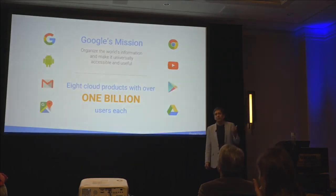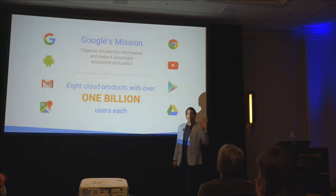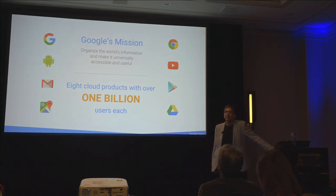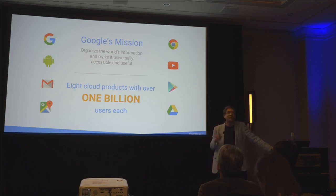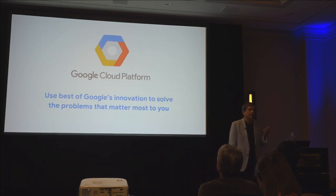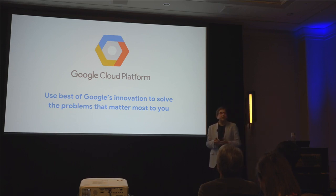I'll tell you a little bit about Google and then lead on to the AI of Google. Google's mission from day one has been to organize the world's information and make it universally accessible and useful. Starting with Google Search, we've created eight products that have a billion monthly active users each — Google Drive is the latest to hit a billion. Google Cloud, which is what I'm with, is a division of Google whose mission is to take all of the innovation Google has done over the last 20 years and make it available to you.